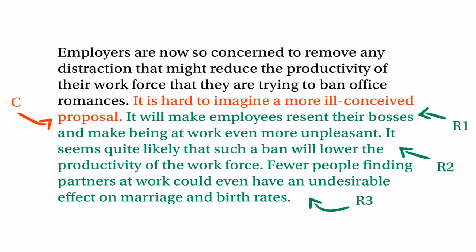Going back to the original argument, we can confirm the conclusion by reading out each of the reasons with 'therefore' in between: 'It will make employees resent their bosses — therefore, it's hard to imagine a more ill-conceived proposal.' Also: 'It seems quite likely that such a ban will lower the productivity of the workforce — therefore, it's hard to imagine a more ill-conceived proposal.' And finally: 'Fewer people finding partners at work could even have an undesirable effect on marriage and birth rates — therefore, it's hard to imagine a more ill-conceived proposal.' So by experimenting with the statements, we can confirm the conclusion.